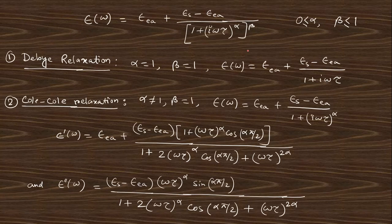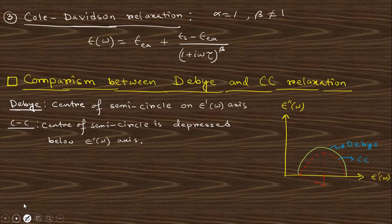For the generalized function: for Debye relaxation, alpha and beta both equal 1. For Cole-Cole relaxation, alpha is not 1 but beta equals 1. For Cole-Davidson relaxation, there is yet another set of parameters. Comparing Debye and Cole-Cole, the Cole-Cole arc is deformed from the Debye semicircle — the center is depressed below the axis. For Debye the center sits on the axis, but for Cole-Cole the center is shifted downward.